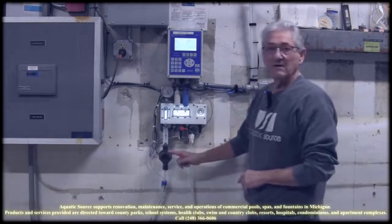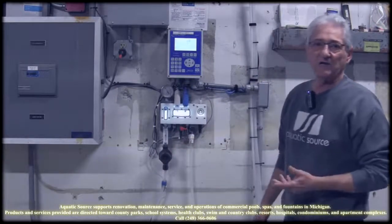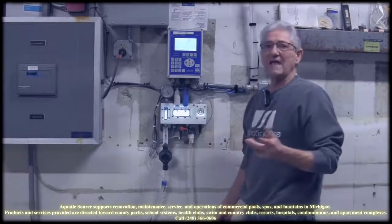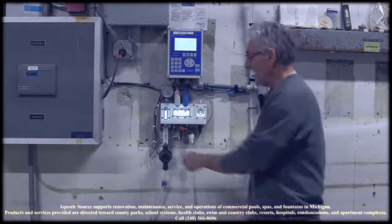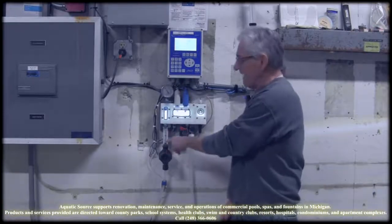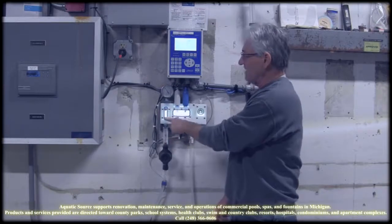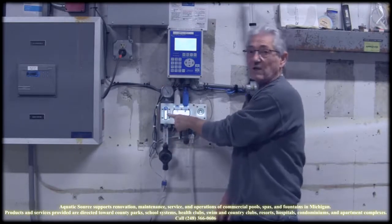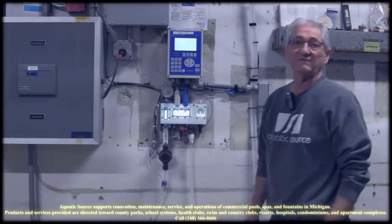We also have the Y strainer that periodically you're going to have to check because anything that gets through your filter system is going to stop this, drop the flow, and when it drops this lighted flow cell has the flow here that will actually turn this red telling you there's not enough flow.